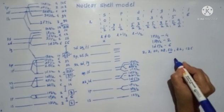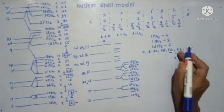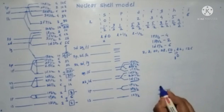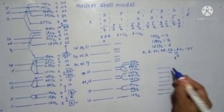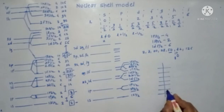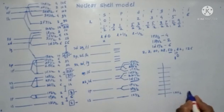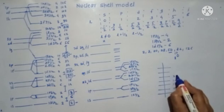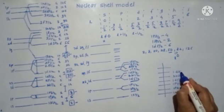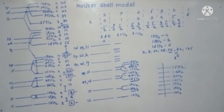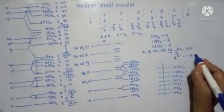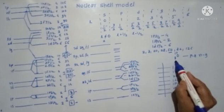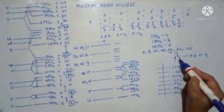Now, if you want to calculate the spin parity of some nuclei — say ⁸O¹⁷ — you can draw the energy level diagram. We have 1S 1/2, 1P 3/2, 1P 1/2, then 1D 5/2, 2S 1/2, 1D 3/2, and then 1F 7/2. For ⁸O¹⁷, the number of protons is 8 and the number of neutrons is 9.